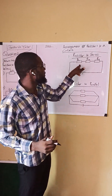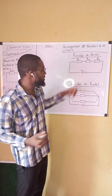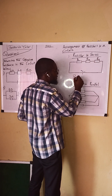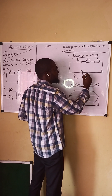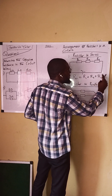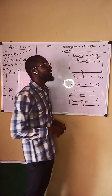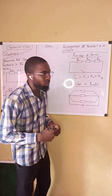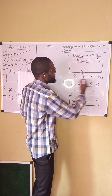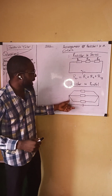To get the equivalent resistance of resistors in a series circuit, the total resistance is the sum of all resistances. That is: total resistance equals R1 plus R2 plus R3. For series, we simply sum everything together.